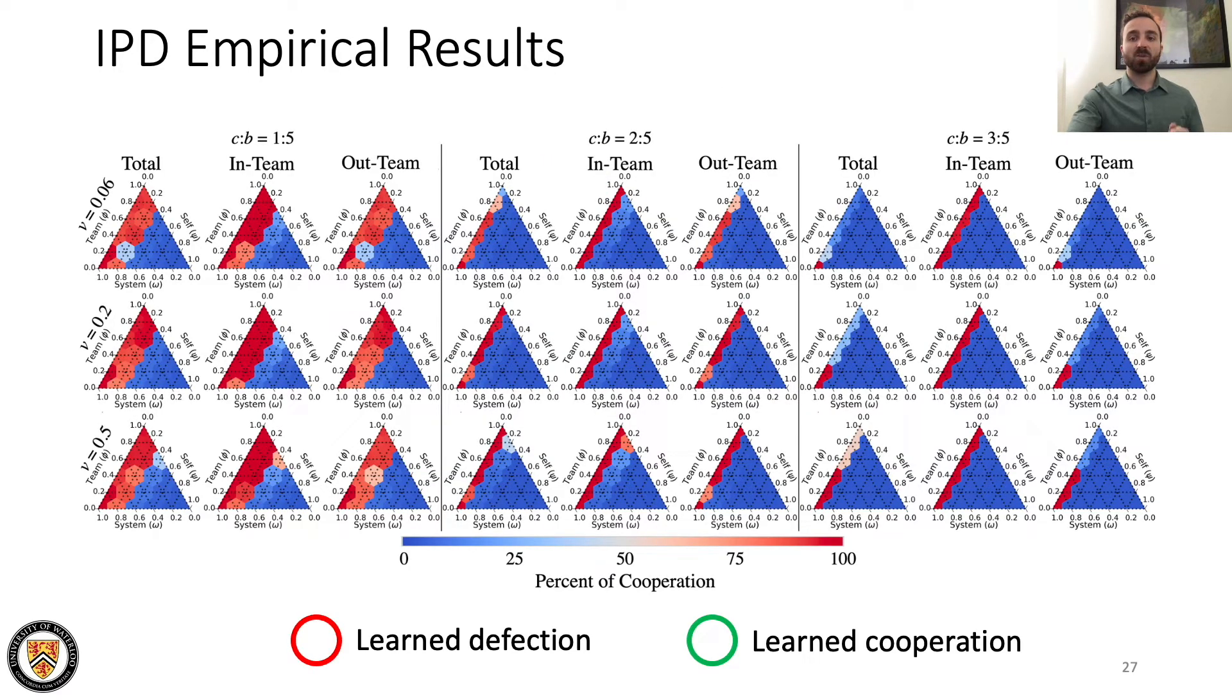In our empirical evaluation, we implement the IPD with a population of 25 deep Q-learning agents split up into 5 evenly sized teams in the same environments as the previous figure. We evaluate credo at stepwise resolutions of 0.2, and all agents follow the same credo for the duration of experiments as a base case.